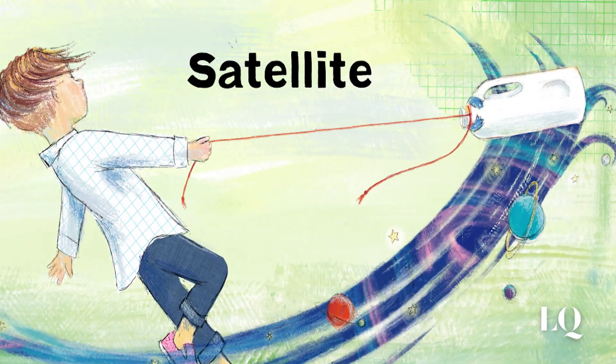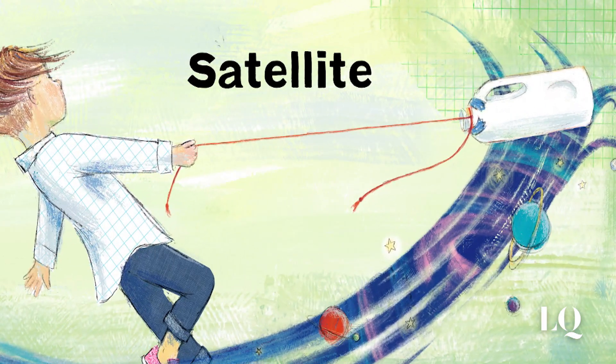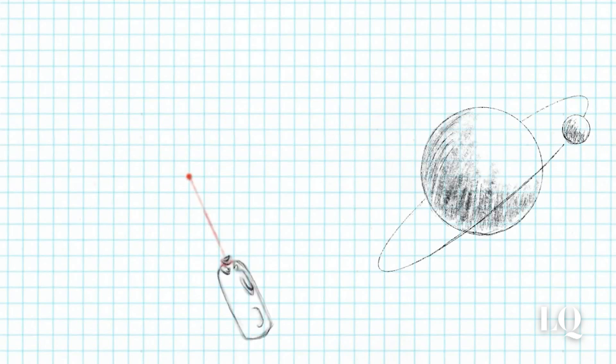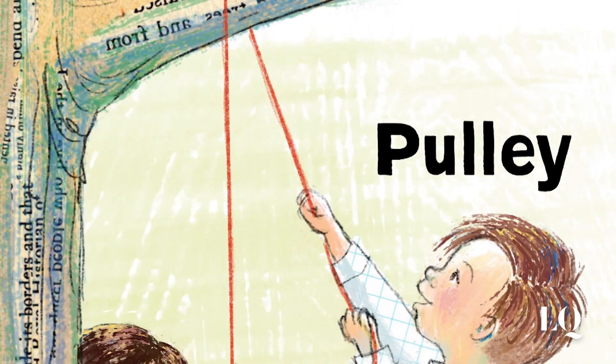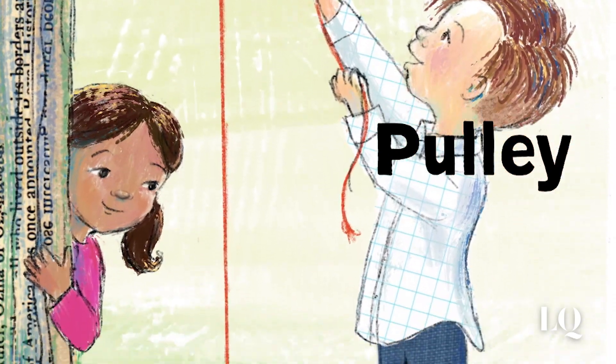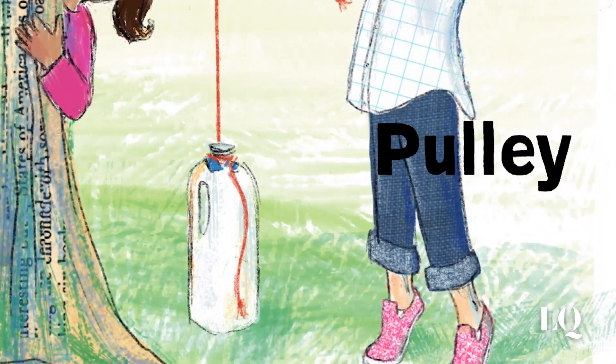Satellite: When Quinn holds Something Great string tight and spins around, their movement creates centripetal force which acts like gravity's hold on satellites orbiting Earth or a moon orbiting a planet. Pulley: Using a tree branch, Quinn discovers that they can pull down on Something Great string and make the milk jug move up.